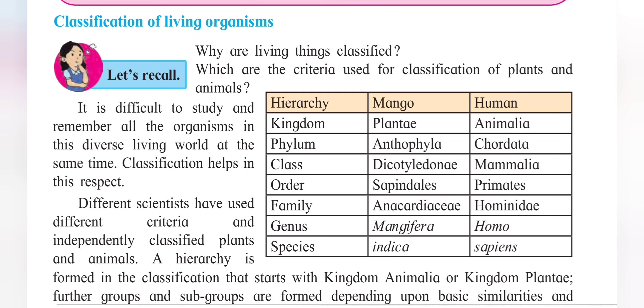It also says that every living organism has its biological name of which the first part is called its genus and the second part is called its species. Thank you.